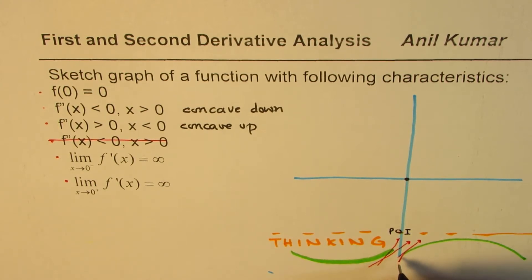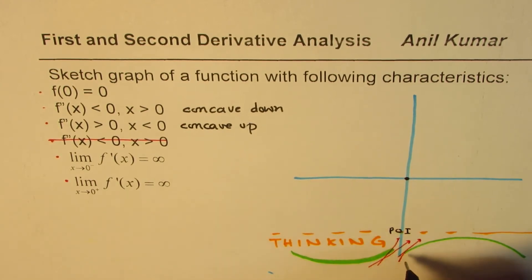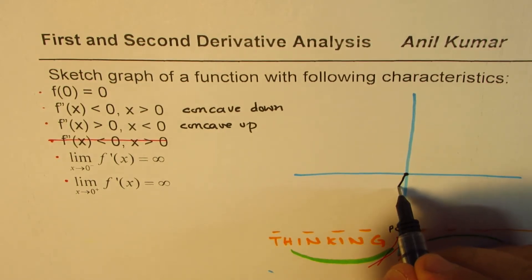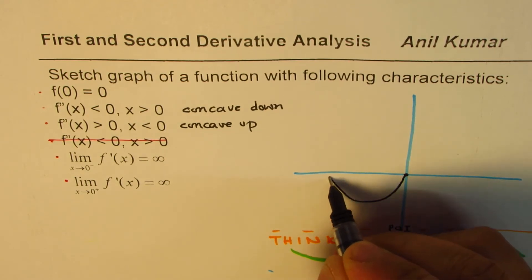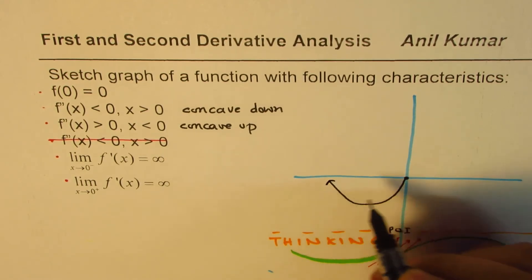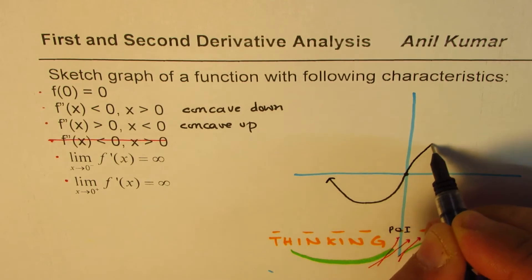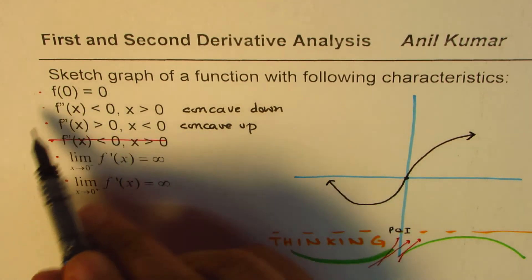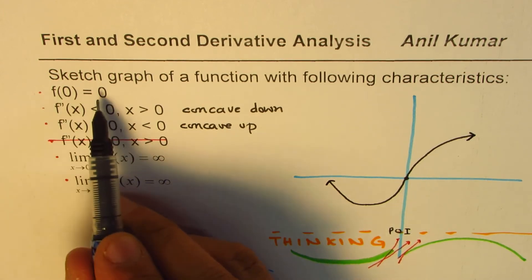So as soon as you get point of inflection, simplest graph is kind of a cubic function type. You could draw all like this. See if I draw a function kind of like this and here if I turn the concavity kind of like this, in that case we meet all the conditions.